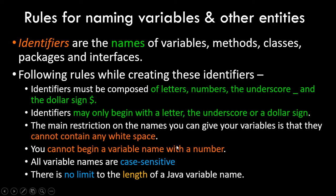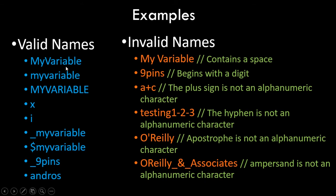Here are examples of valid and invalid variable names. Valid names include: 'myVariable' (joined, no space), names with different cases — since Java is case sensitive, capital 'MyVariable' is different from 'myVariable'. A single alphabet is valid, and you can start with underscore or dollar sign. Invalid names include: names with a space in between, names starting with a number, names with a plus sign, hyphens, apostrophes, or an ampersand — these are not allowed.